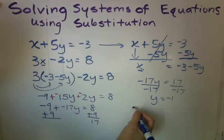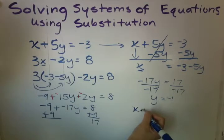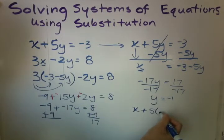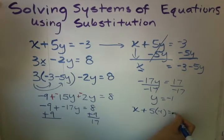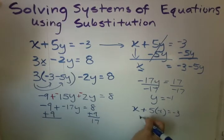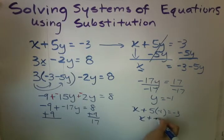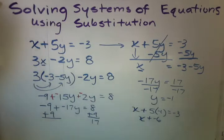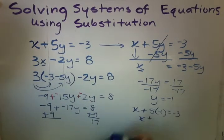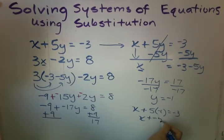So I'm going to choose the first equation. So x plus 5 times negative 1 equals to negative 3. x plus negative 5 equals to negative 3. And we're going to add 5 to both sides. Then we have x equals positive 2.